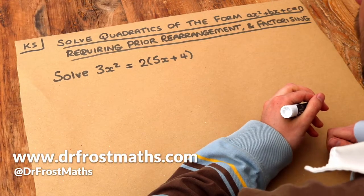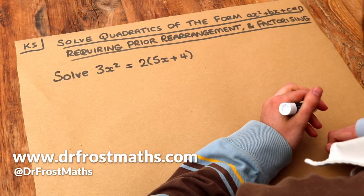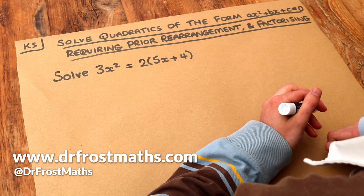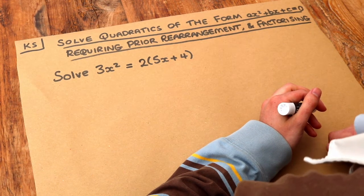Hello and welcome to this Dr. Ross-Mass key scale video on solving quadratics of the form AX squared plus BX plus C equals zero, requiring prior rearrangement and factorising.